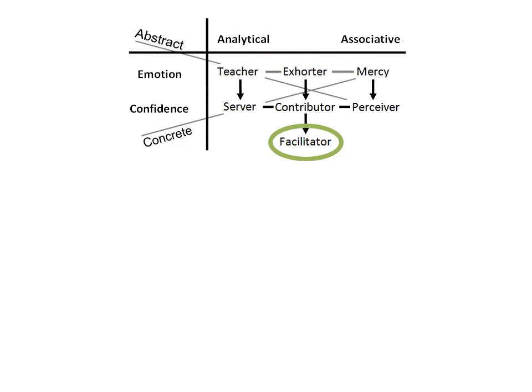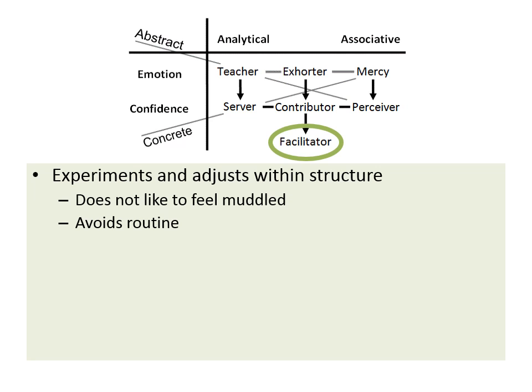Looking now at the final cognitive style — the facilitator. Notice the arrow that goes from exhorter to contributor to facilitator. Exhorter provides the initial idea and excitement; contributor turns this into a plan by adding facts from perceiver thought and actions from server thought. Facilitator thought then uses analog thinking and mixing to create a flow out of the plan that comes from contributor thought. Facilitator thought thinks in terms of analog, in terms of grays — not black and white. The immature perceiver person tends to think in black and white, but for the facilitator person, gray is adjustable.